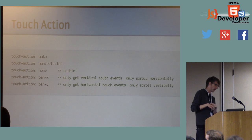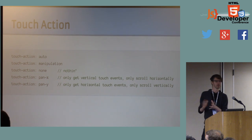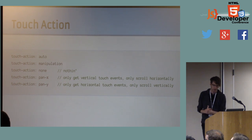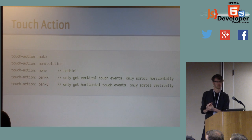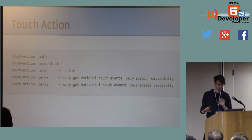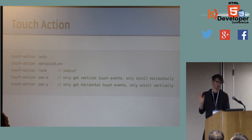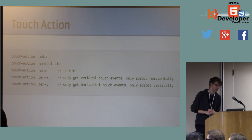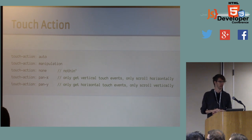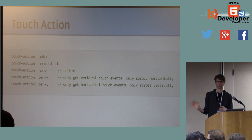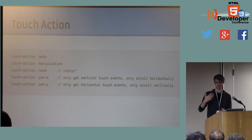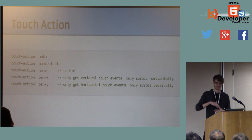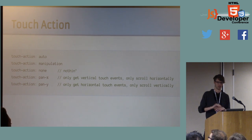Touch-action is the new CSS property I was talking about. The most interesting values — which is one part of the pointer events spec, the part being implemented most quickly by most browsers — are the three at the bottom. Microsoft has implemented the entire pointer events spec; Chrome has now implemented touch-action. No word from Apple. pan-x and pan-y do about what you'd expect: they let you specify that you only want to allow scrolling in one direction, and you only want touch events in the other direction.